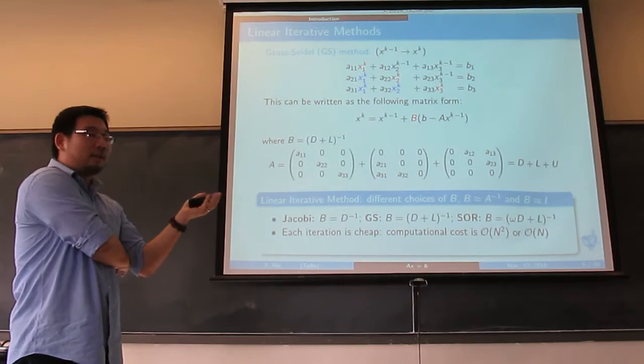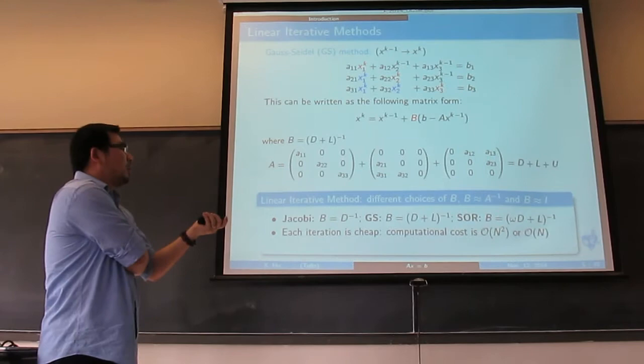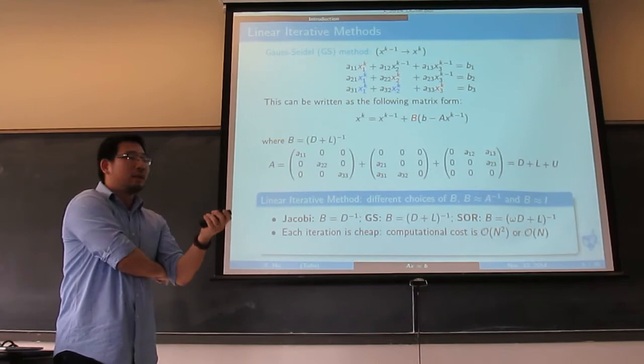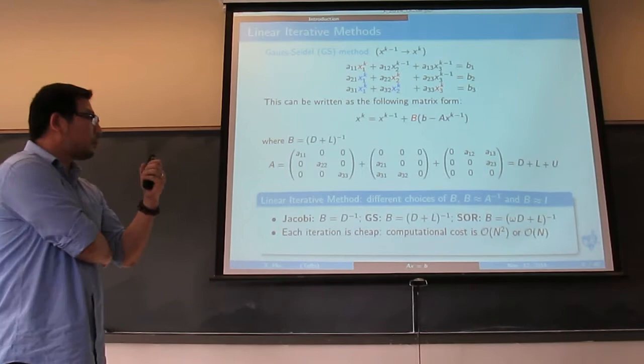The good thing about iterative methods is the computational cost is cheap compared with the direct method. If you have a dense matrix, the cost is N squared. If you have a sparse one, it's O(N). So it's much cheaper than the direct method.